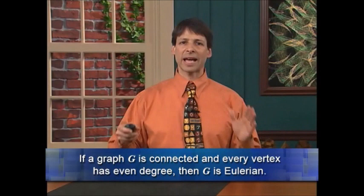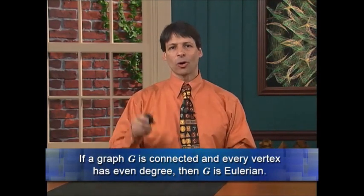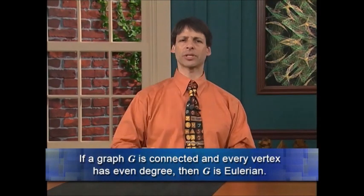So far we've shown that if G is Eulerian, then G must be connected and every vertex must have even degree. But what about the converse? Is it true that if a graph is connected and every vertex has even degree, then the graph must be Eulerian? Can you always draw it without retracing edges and end up where you started? The answer is yes — if a graph is connected and every vertex has even degree, then G is Eulerian.